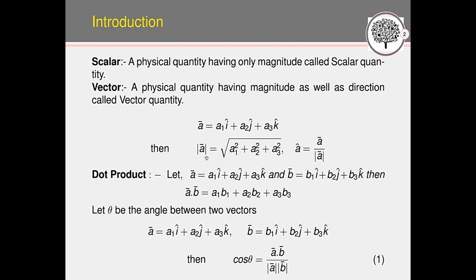To find the magnitude of vector a, we compute the modulus of a, which is the square root of a1² plus a2² plus a3². If we want the direction vector, a-cap is equal to the vector a-bar divided by its magnitude. This is called the direction vector or unit vector a-cap.